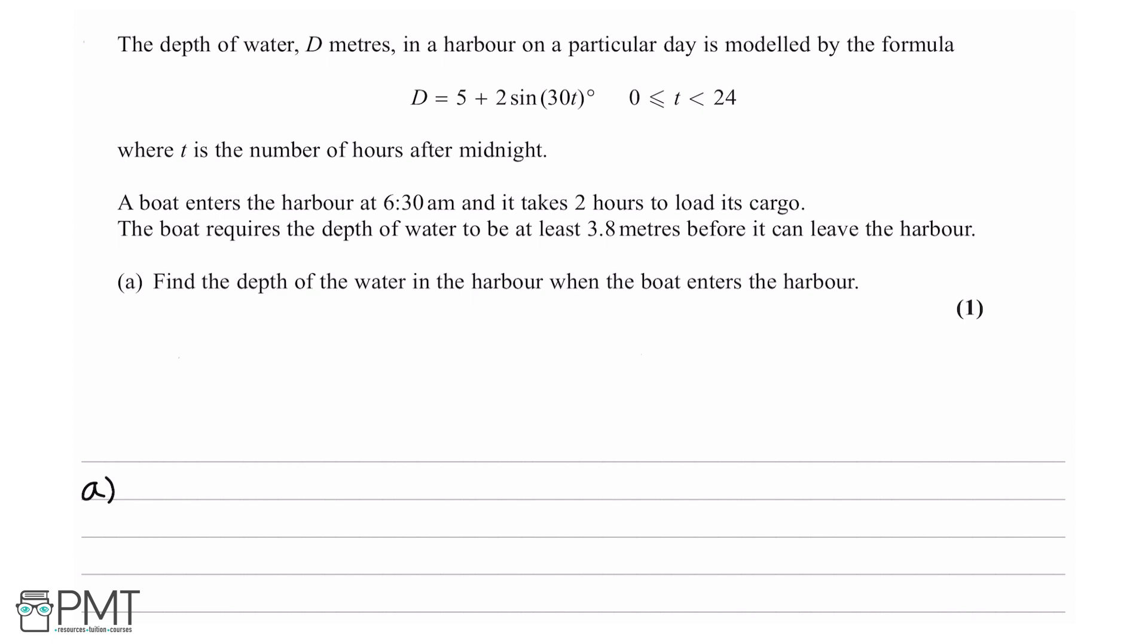For one mark, this question is pretty straightforward. The first thing we're going to have to do is convert 6:30am into a duration after midnight. Because remember t is the number of hours after midnight and it enters at 6:30am. So this would be 6 hours and 30 minutes or because remember t is in hours, 6.5 hours.